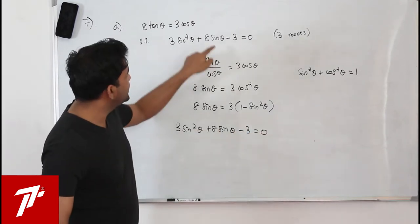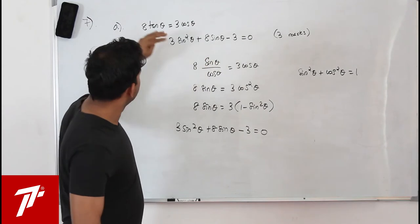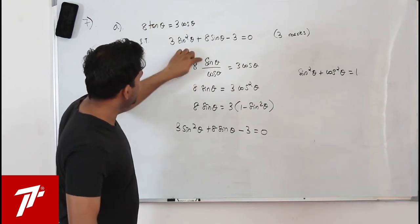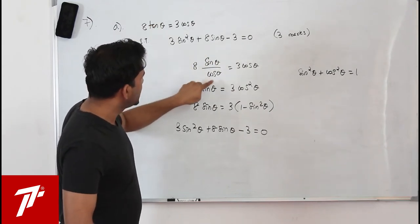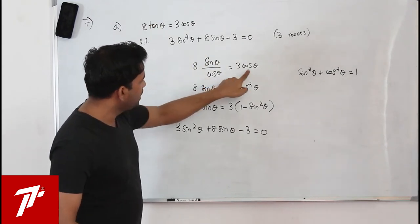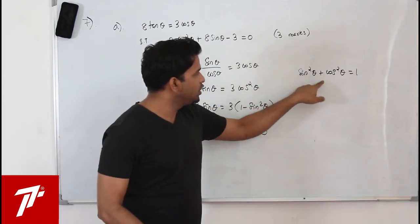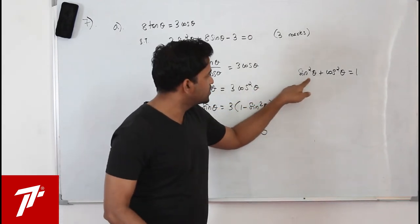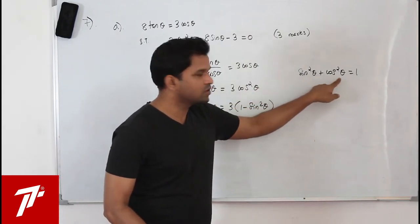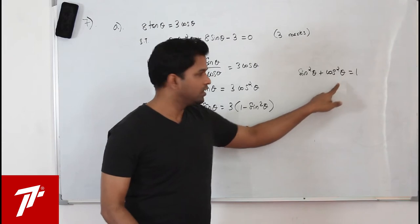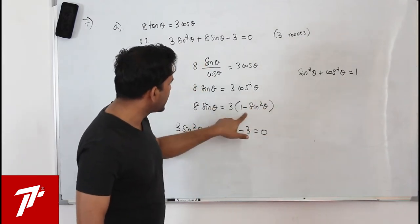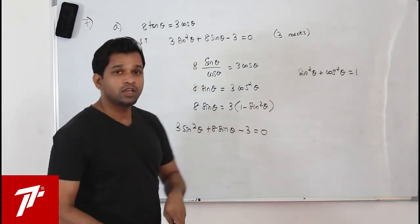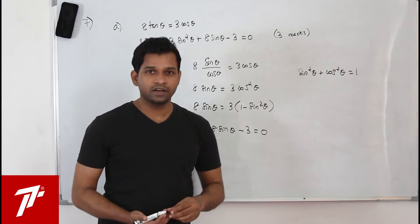Using the identity sin² θ + cos² θ = 1, replace cos² θ with 1 minus sin² θ. So 8 sin θ = 3(1 minus sin² θ) = 3 minus 3 sin² θ. Rearranging gives 3 sin² θ + 8 sin θ minus 3 = 0. Easy 3 marks.